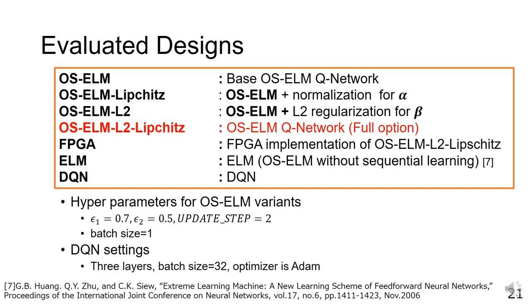The fourth is OS-ELM-L2-Lipschitz, which is the complete set of our proposed OS-ELM Q-Network. The fifth is ELM, which performs the same algorithm as OS-ELM base using the ELM method without sequential learning. The sixth one is DQN, which is a typical deep reinforcement learning method.